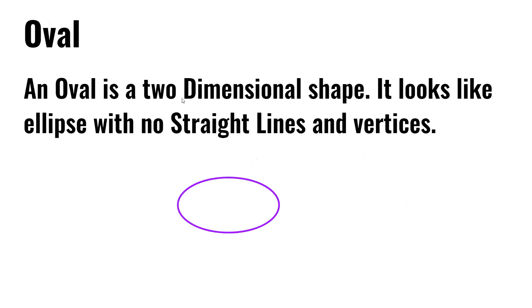An oval is a two-dimensional shape. It looks like an ellipse with no straight lines and vertices.